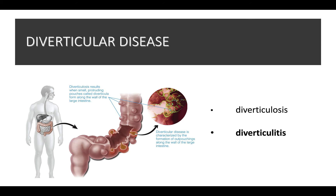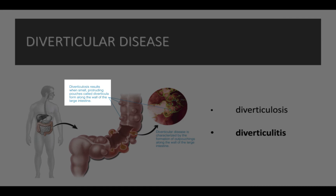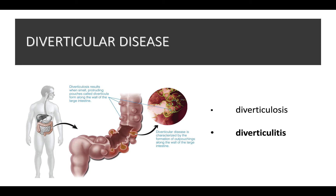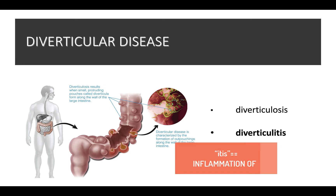Diverticular disease is two conditions: diverticulosis and diverticulitis. Diverticula refers to little pouches that may form throughout the large intestine. Diverticulosis is when the small protruding pouches form along the wall of the intestine. Diverticulitis is when these pouches become inflamed. ITIS means inflammation — appendicitis, tonsillitis. Diverticulitis means inflammation of the diverticula.